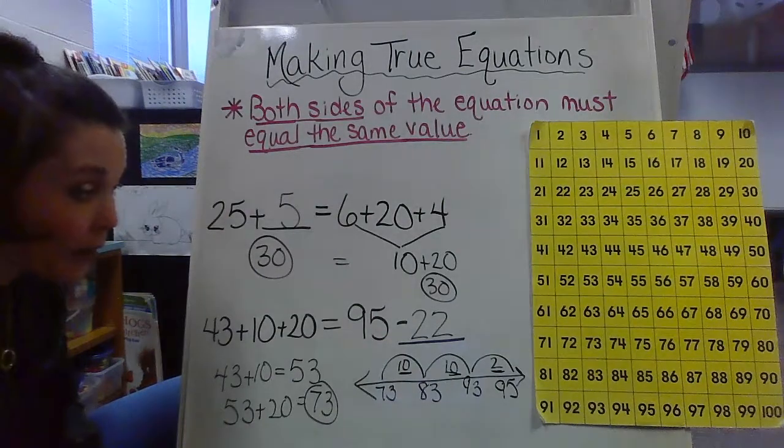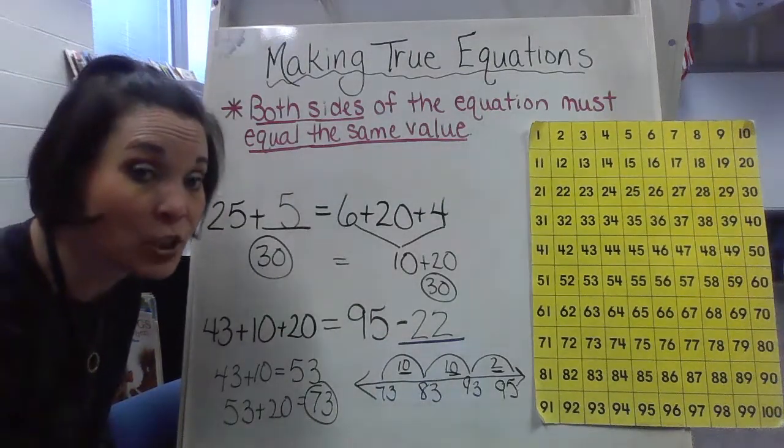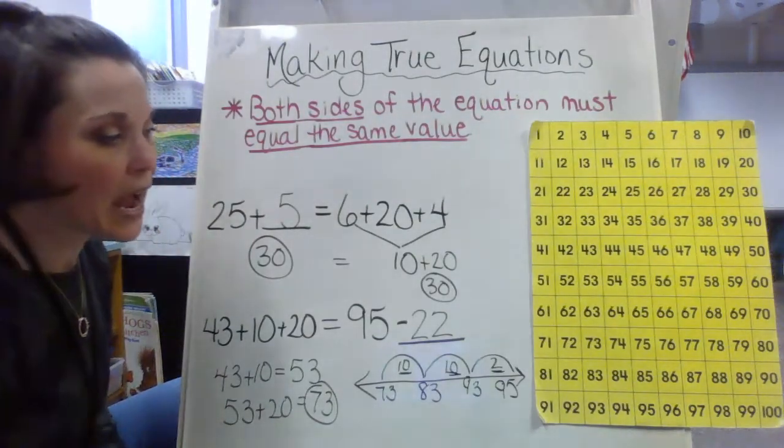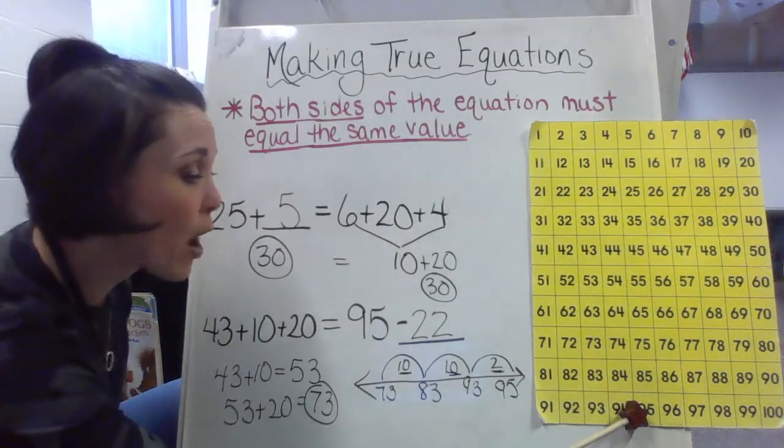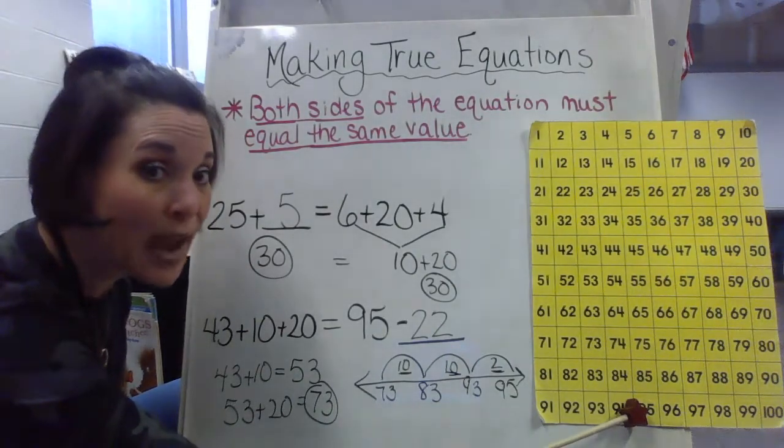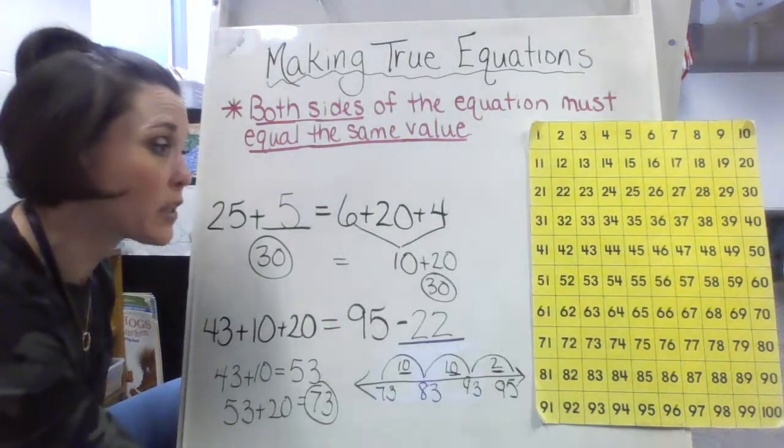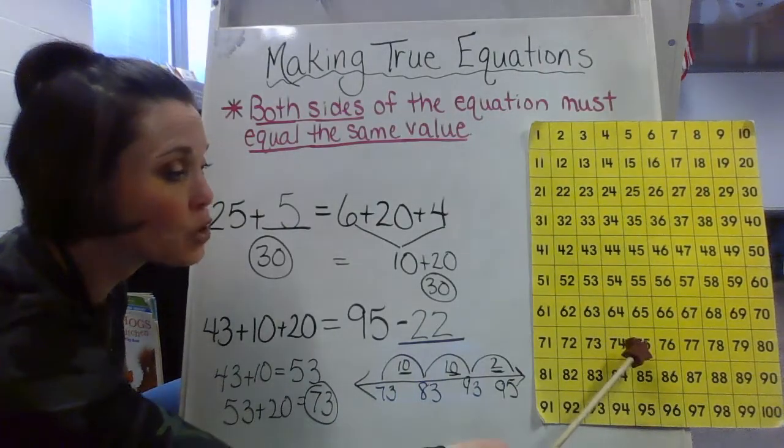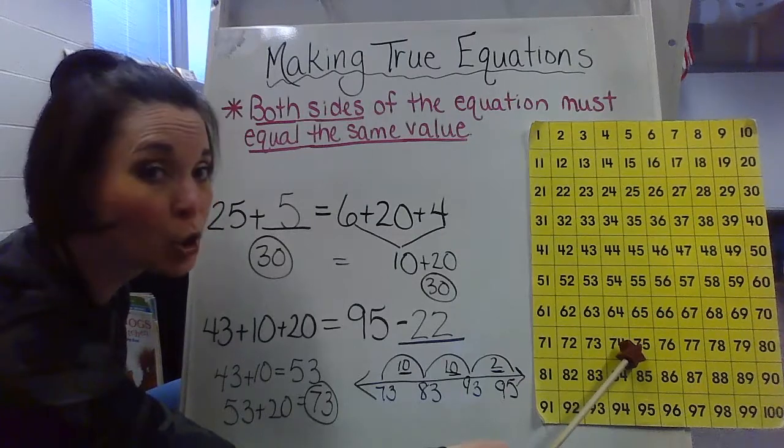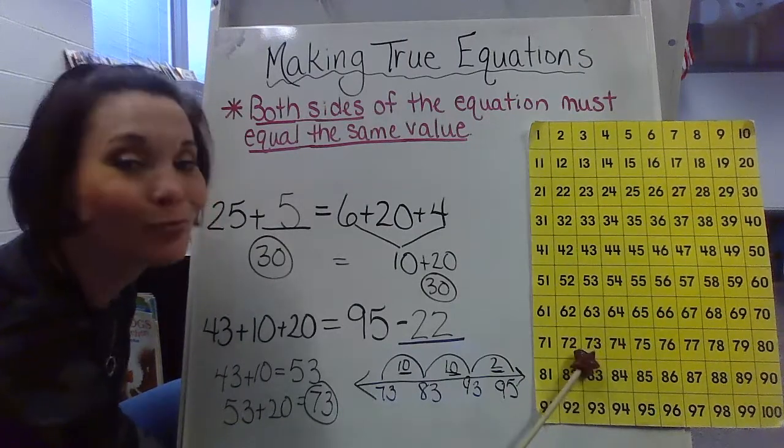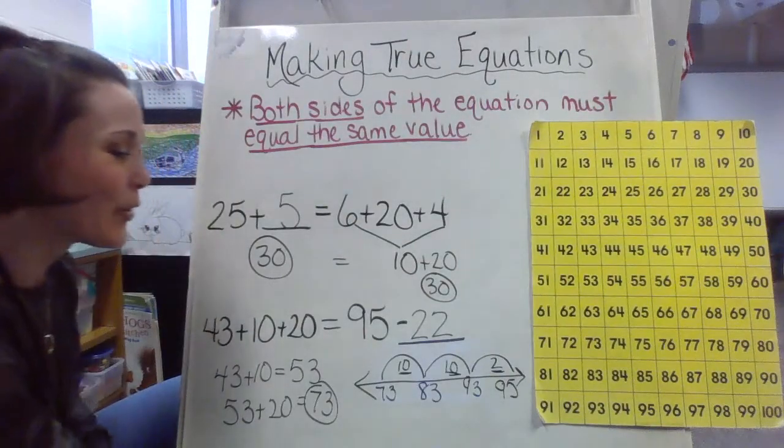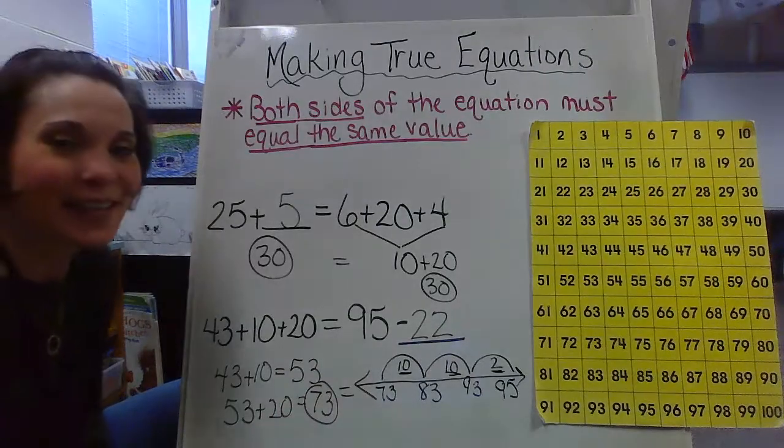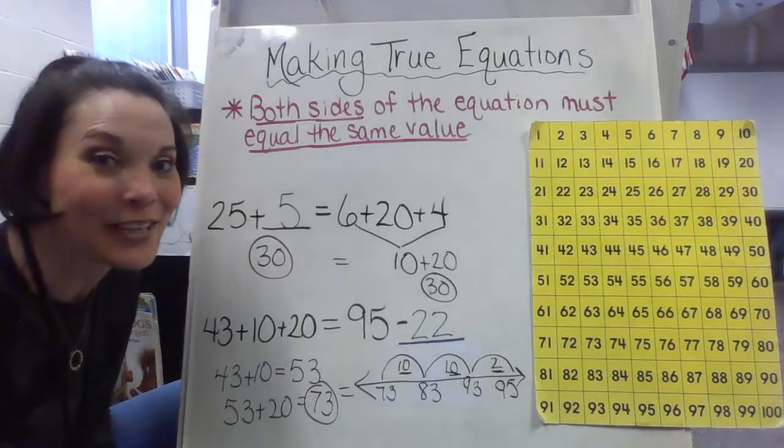But let's just double check and make sure 95 minus 22 is going to be 73. Let's make sure that they're true. So if I'm at 95. 95 is right here. I want to go up 2 tens because you know when you move on a chart and you want to subtract, you're going to be moving up. If it's 2 tens, 2 spots up, 10, 20. And then over 2 ones, 1, 2. There I am. I'm right at 73. So therefore, we're looking at equal. We are looking at true equations here.